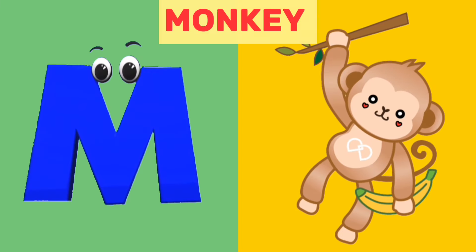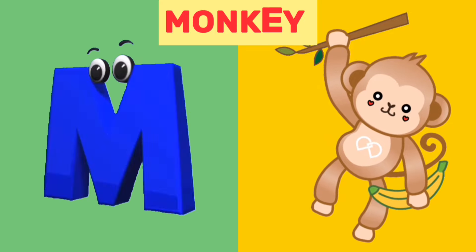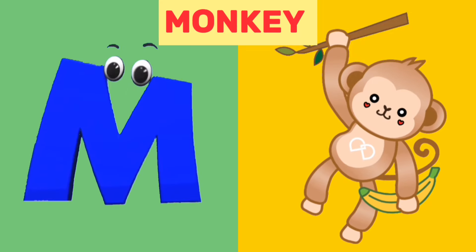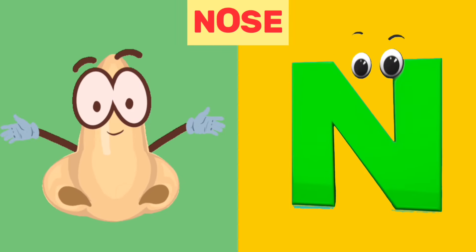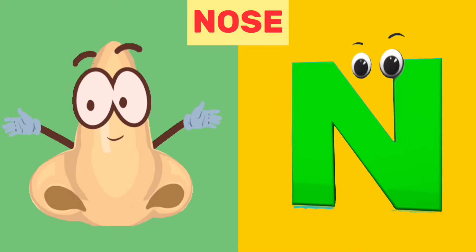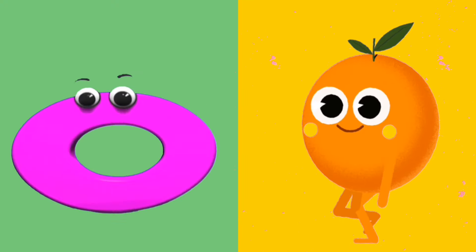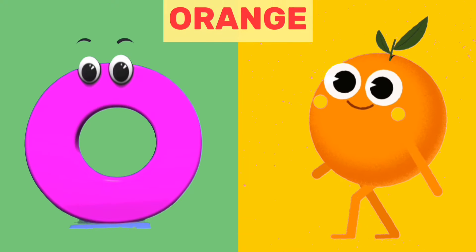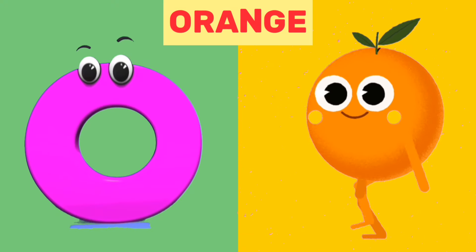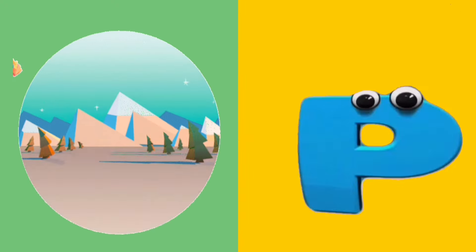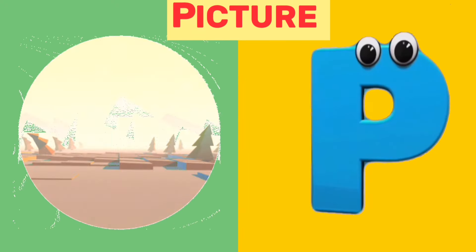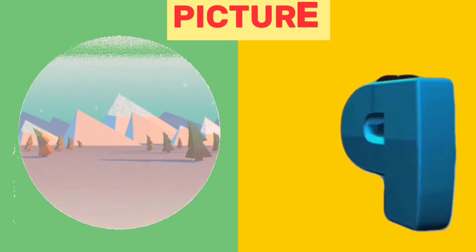M is for Monkey. M, M. Monkey. N is for Nose. N, N. Nose. O is for Orange. O, O. Orange. P is for Picture. P, P. Picture.